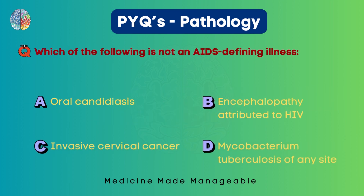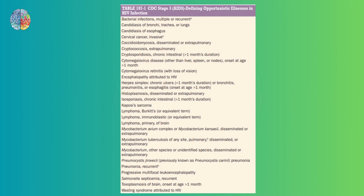Which of the following is not an AIDS-defining illness? Is it oral candidiasis, encephalopathy attributed to HIV, invasive cervical cancer, or mycobacterium tuberculosis of any site? I've taken the relevant snippet from Harrison's — this is an important table and the question actually came from it. Going through the options, invasive cervical cancer is listed, meaning it is an AIDS-defining opportunistic illness.